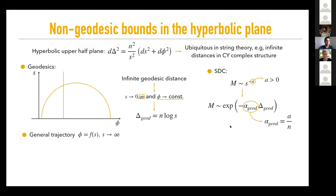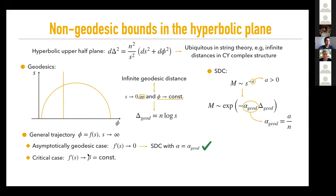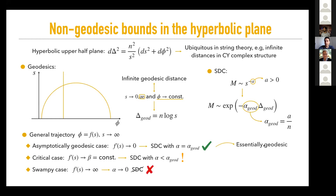Now that the conjecture is satisfied for geodesics, let's consider non-geodesics — a trajectory where the axion does things while the saxion goes to infinity. You can classify these trajectories according to the SDC in three cases. The asymptotically geodesic case, where f prime goes to zero: the SDC is perfectly satisfied with alpha being the geodesic alpha. The critical case, where f prime goes to a constant: you get a non-zero alpha, smaller than the geodesic alpha — dangerous but still okay. Finally the swampy case, where f prime goes to infinity: alpha goes to zero and the SDC is violated.